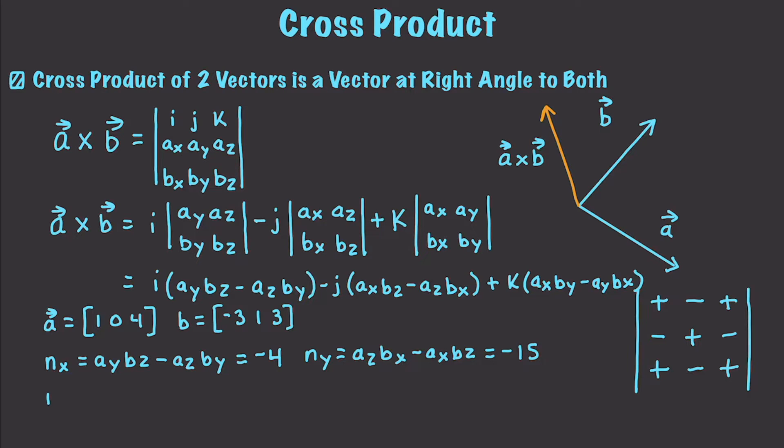And then we can calculate NZ, and that is going to be aX times bY minus aY times bX, which is equal to 1 times 1 minus 0 times negative 3. And that is going to end up being equal to, of course, 1. So, that means that our normal vector is going to be equal to [-4, -15, 1]. Alright, so pretty easy stuff.